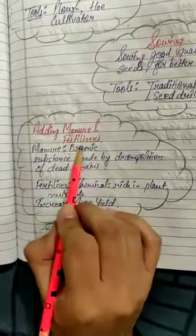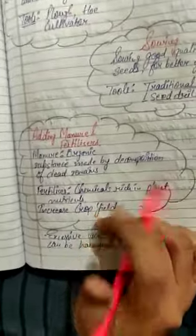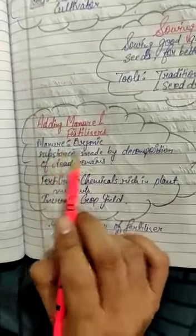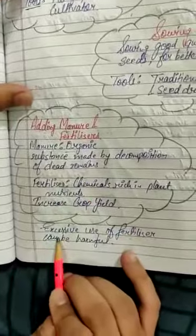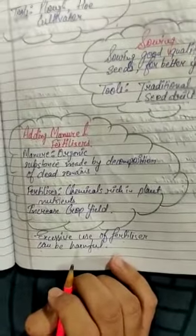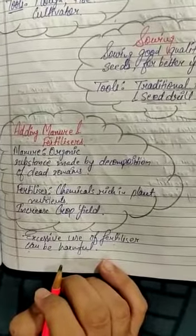The step of adding manure and fertilizer - when we add manure to the soil, that process is called manuring. Manure is beneficial because it does not have any disadvantages, whereas excessive use of fertilizers can be harmful because it causes both land and soil water pollution.